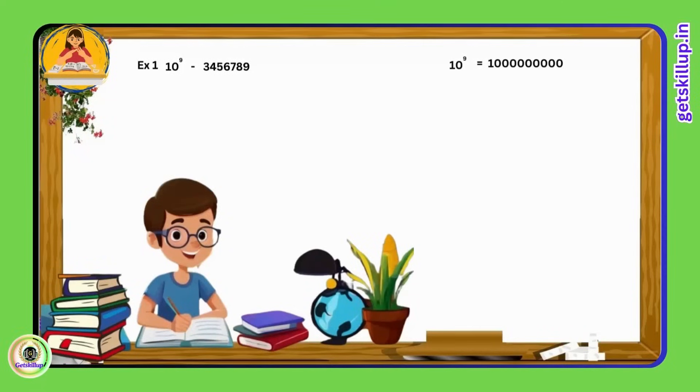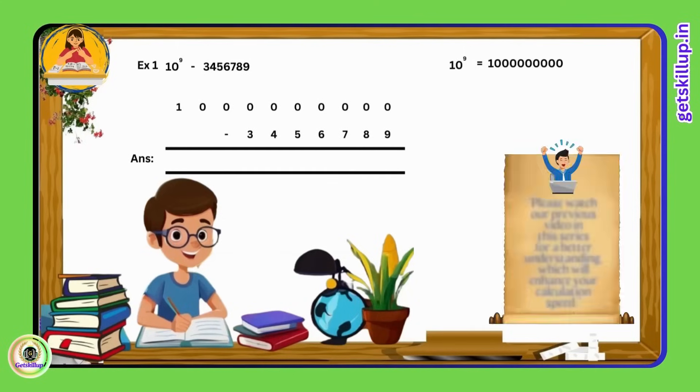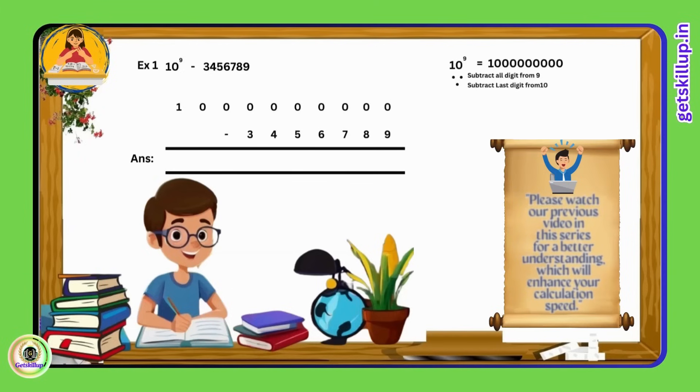10 to the power of 9 minus 34 lakhs 56,789. We apply a simple rule: subtract all from 9 and subtract the last from 10.